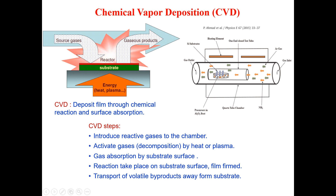Once the thin film is formed, there is a transport of volatile byproducts away from the substrate. In both CVD setups, you can see a gas outlet designed to take away the byproducts from the system once the desired material has been formed. These exhausted materials are normally called the exhaust waste.